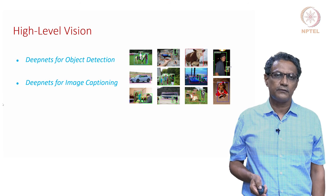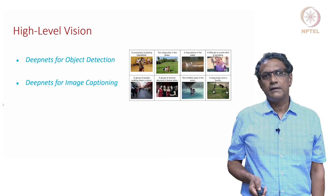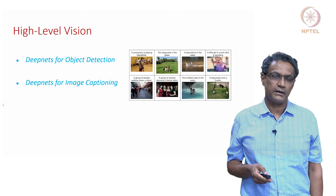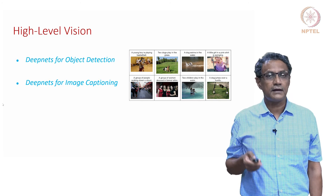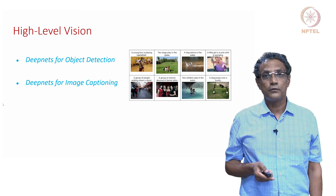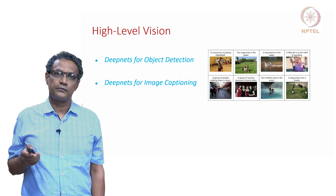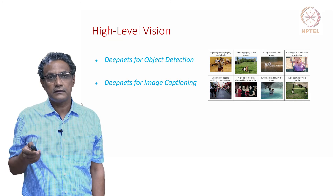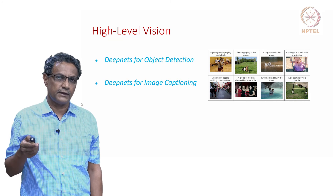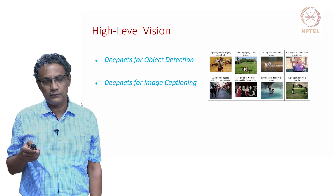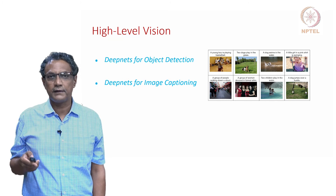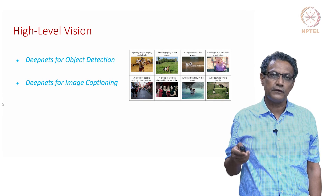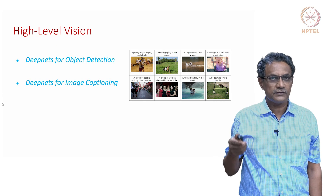Another high-level vision task is deep networks for image captioning, which means that given an image, you can summarize what is happening in it — this is exactly what you want a deep network to do. This course will also have tutorials and a lab component, meaning that for some of the methods we talk about, you will get the opportunity to actually implement them, code them, and see them work. The overall idea is that this course should give you a firm grounding that will launch you into the exciting world of AI.